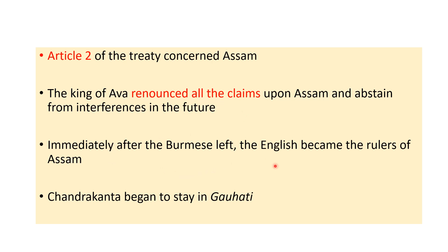With the Burmese gone, the English forces became the rulers of Assam. Notably, Assam was not represented in this treaty — it was purely between two foreign powers, the English and the King of Burma, who decided among themselves that the English should rule Assam. The Ahom kings — Chandrakanta Singha and Jogeswar Singha — were sidelined and denied their claim. They were asked to stay aside. Chandrakanta stayed in Guwahati where he later died, and Jogeswar Singha stayed in Jorhat where he also died.